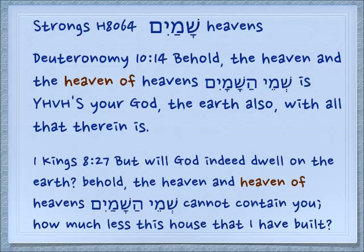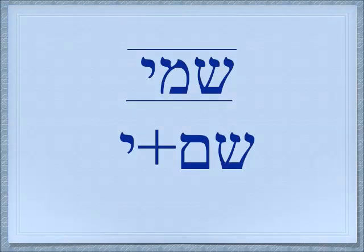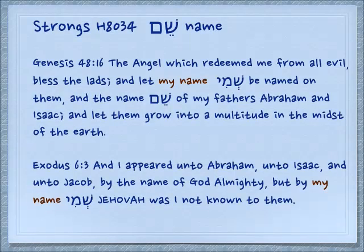It's just somebody made a decision in translation to make it either heaven singular or heavens plural. Again, 1 Kings 8:27: But will God indeed dwell on the earth? Behold, the heaven and the heaven of heavens — shemay hashemayim — cannot contain you. How much less this house that I have built? — a prayer of Solomon. Now if you look at that form, shemay, you can see it looks like the word for name — shem — plus the personal pronoun for my. Genesis 48:16: The angel which redeemed me from all evil, bless the lads, and let my name — shmi — be named on them. The heavens of is shmei; this is shmi.